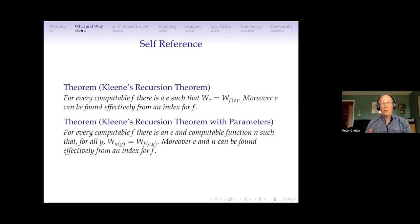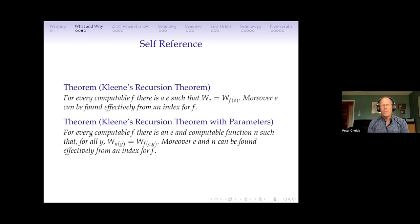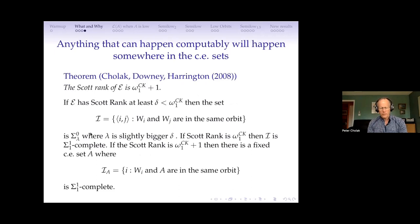Moreover, with Kleene's recursion theorem with parameters, I could do this for lots of sets — that is, if I'm building countably many sets constructively, I could know the indices of all those sets as I'm building them. I have the indices in hand, and I could use those indices to get information about those sets if I'm careful. This makes for complicated constructions where you could actually ask for information about these things.